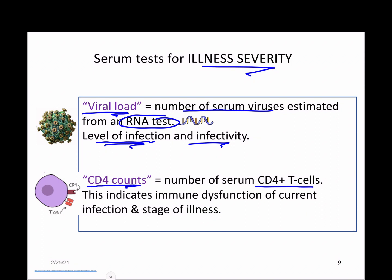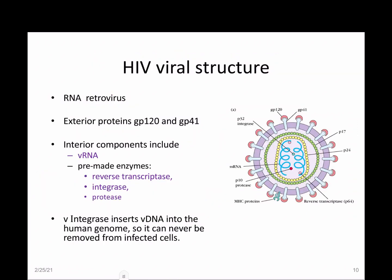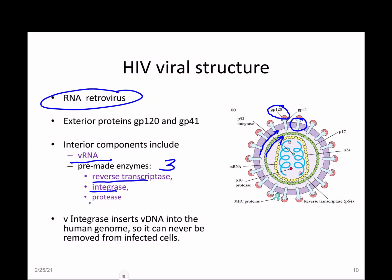The HIV viral structure: as a retrovirus it has RNA, a capsid, an envelope, and two exterior proteins — GP120 and GP41. The interior includes the viral RNA and three pre-made enzymes: reverse transcriptase, integrase, and a protease. Viral integrase is the enzyme that clips and inserts the HIV DNA into the human DNA strand.